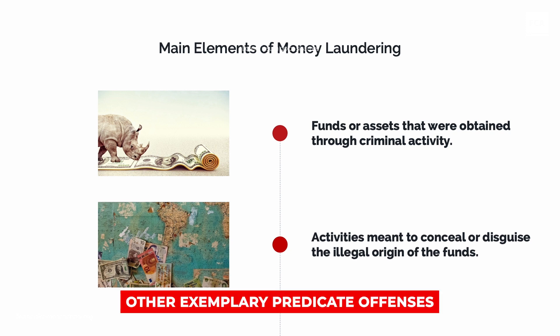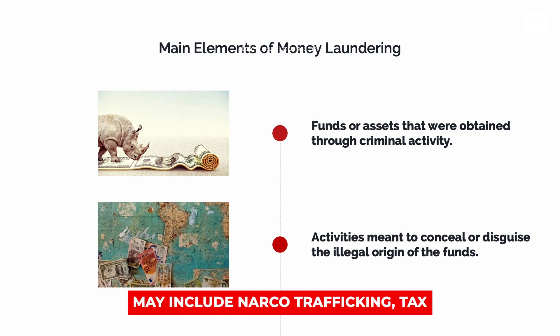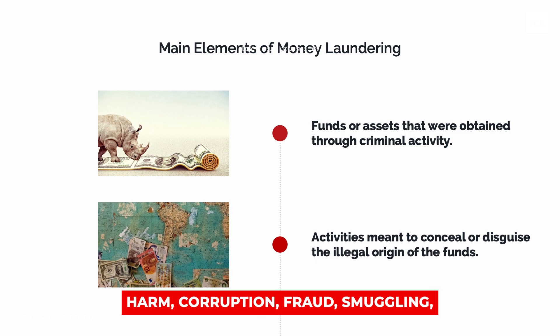Other exemplary predicate offenses may include narco trafficking, tax evasion, murder and grievous bodily harm, corruption, fraud, smuggling, human trafficking, and forgery.